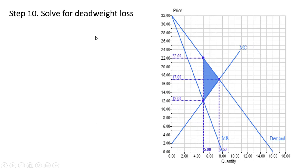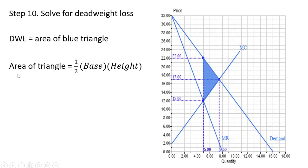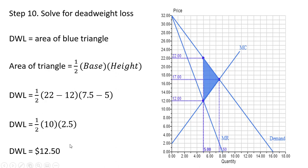Now let's find the deadweight loss, which is a triangle. These are units where consumers are willing to pay more than the marginal cost of production, but they're not being produced. One dimension of the triangle is 22 minus 12 equals 10, and the other dimension is 7.5 minus 5 equals 2.5. The deadweight loss equals $12.50.